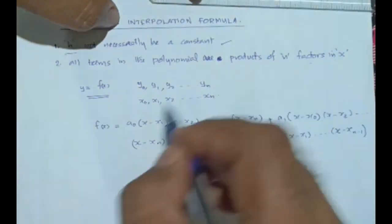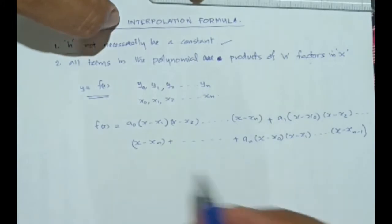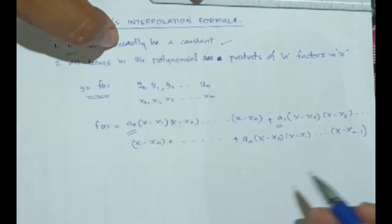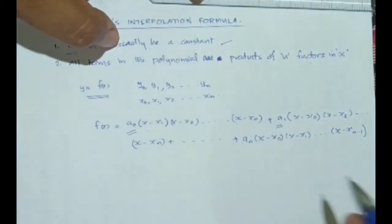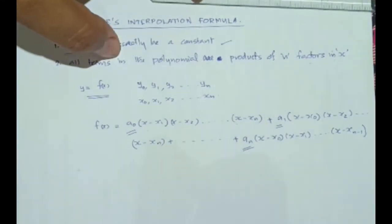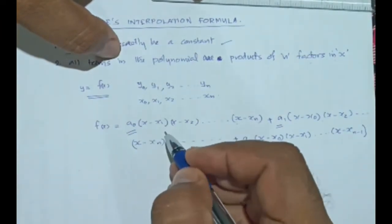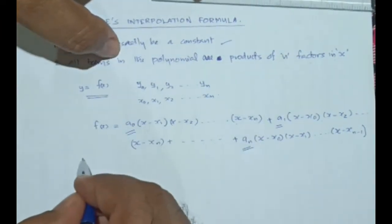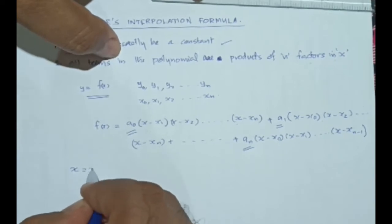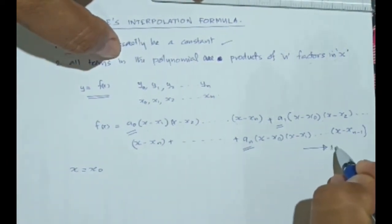So this is our polynomial, where we want to find out the constants a0, a1, a2, etc., up to an. For that purpose, we will make substitutions for these x values. At first, let's substitute x = x0. Let's put this as equation 1.